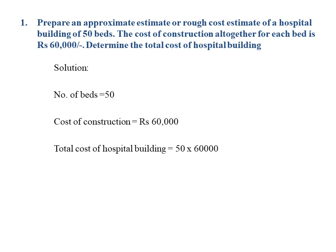Total cost of hospital building is equal to 50 into 60,000, so total cost of hospital building is equal to rupees 30 lakhs. The building's total cost is 30 lakhs.